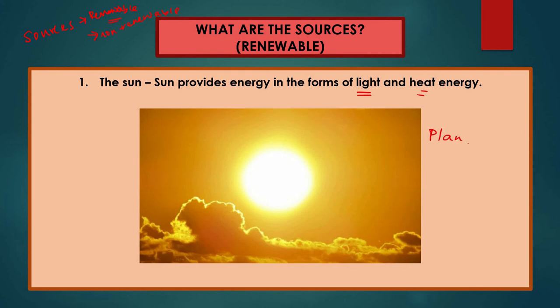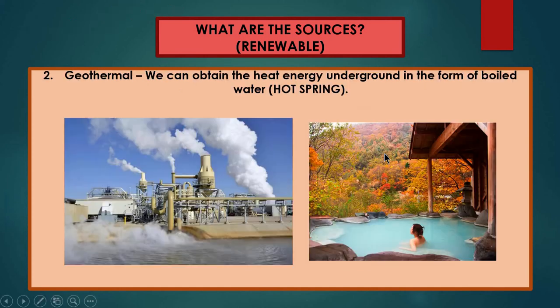Geothermal energy — we can obtain heat energy from underground in the form of boiled water. When we extract geothermal energy, we need to convert it to become other forms of energy through other processes.